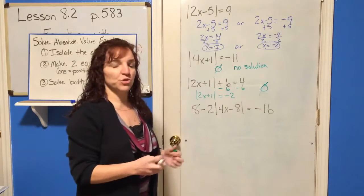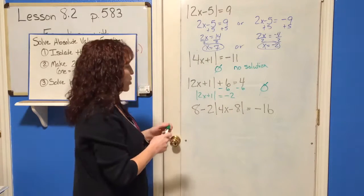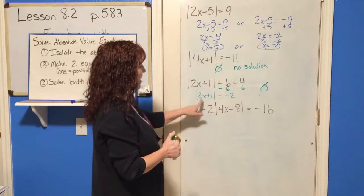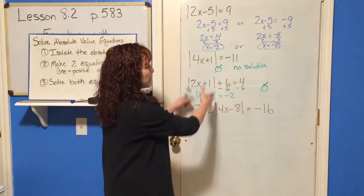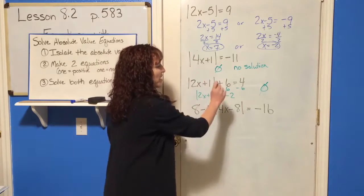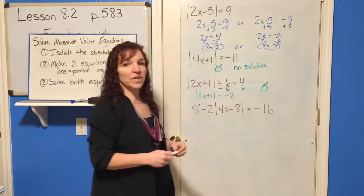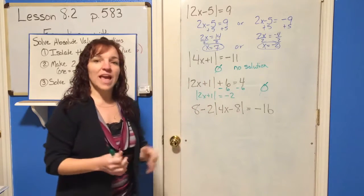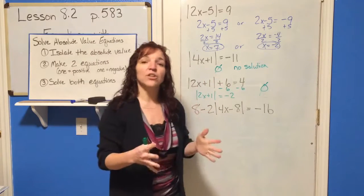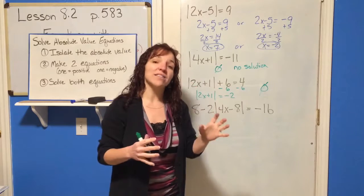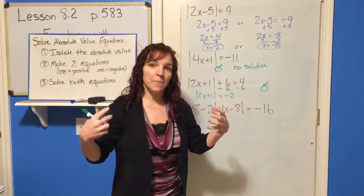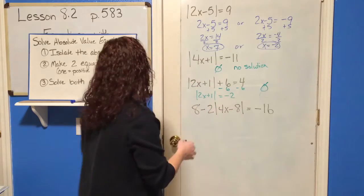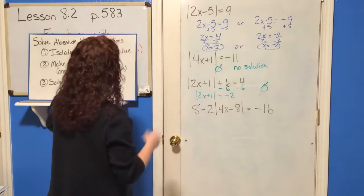There's no way to put any number in, take the absolute value of it, and get a negative number, because the absolute value is always positive — it's always a distance.